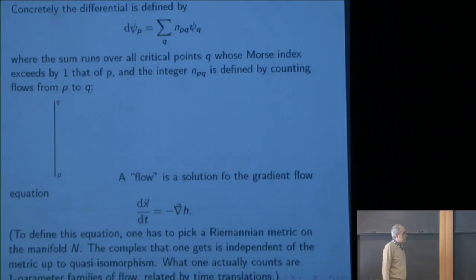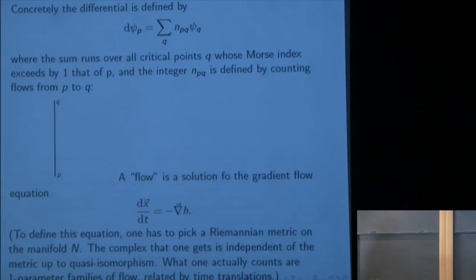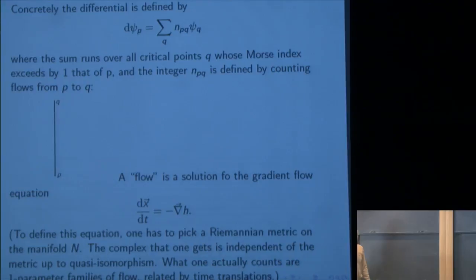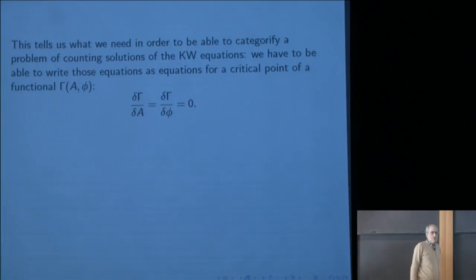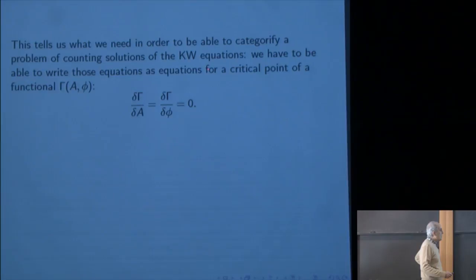Suppose the vector bundle is the cotangent bundle and the section is the differential of a Morse function. Then the zeros of S, which are critical points of H, have the natural categorification described in Morse homology. You define a complex V with a basis vector ψ_P for every critical point P of H. This complex is Z-graded by assigning to ψ_P the index of the critical point — the number of negative directions of the Hessian. It has a natural differential defined by counting gradient flow lines between different critical points. So if you have a problem of counting solutions of a PDE and want to categorify it, you should try to put yourself in this situation.